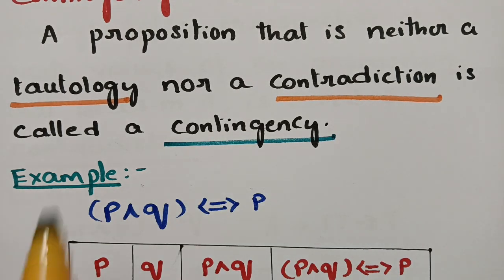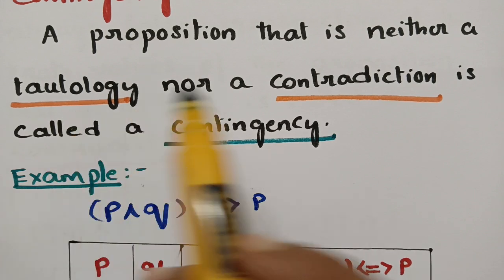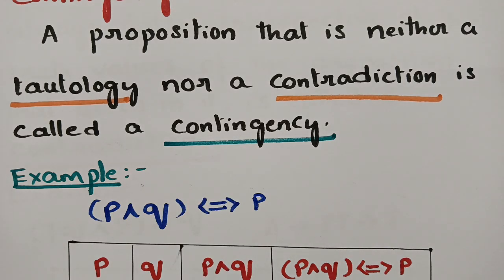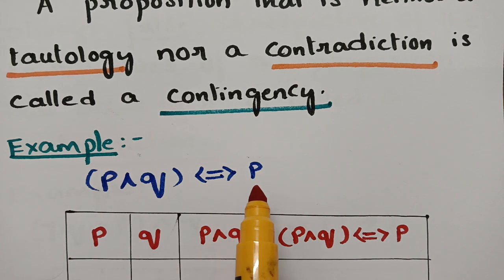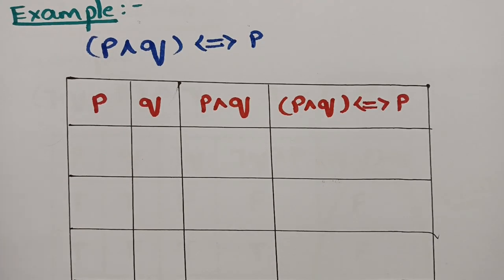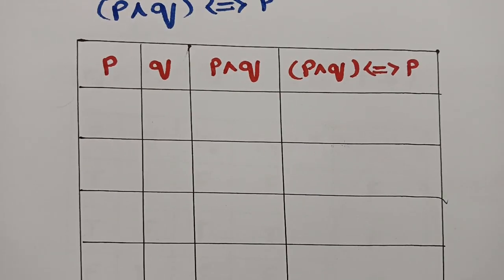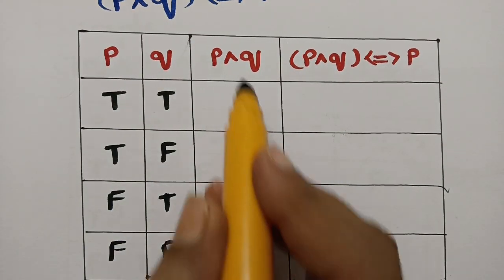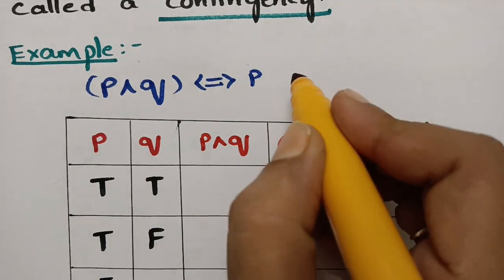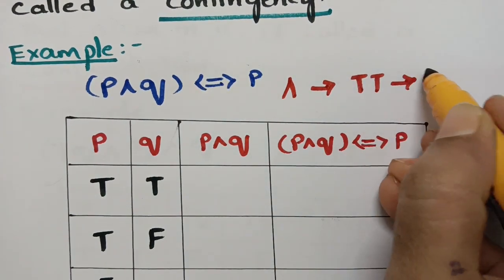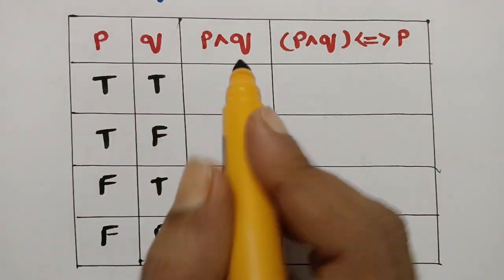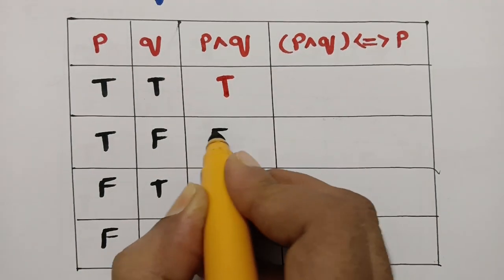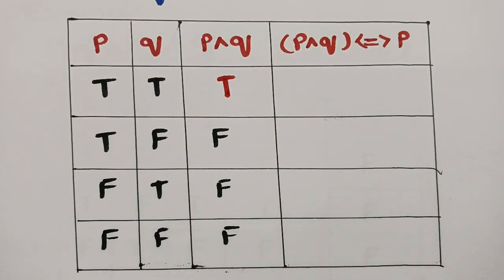This is also very important — don't get confused. Tautology means the final compound statement is always true; contradiction means it is always false; contingency means it is neither always true nor always false — it has a mix of true and false. The example is (p ∧ q) ↔ p. Taking the truth values: true, true, false, false for p and true, false, true, false for q. For AND (conjunction): only double-true gives true, so p ∧ q = true, false, false, false.